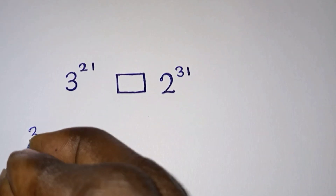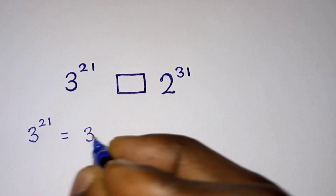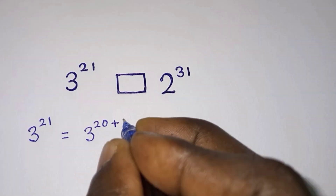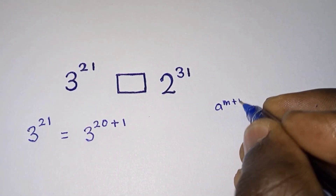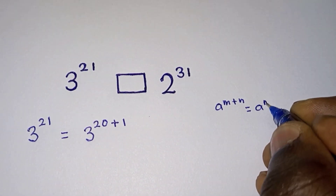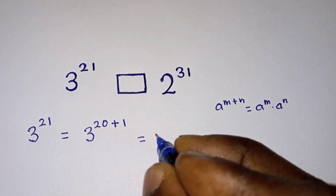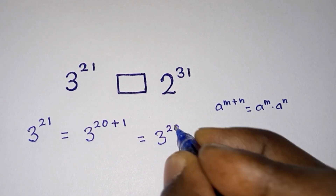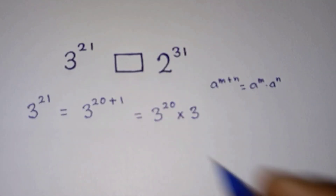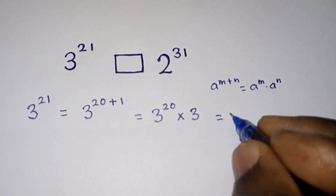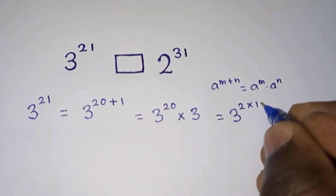First of all, let's pay attention to this number here. We have three to the power 21. We can write this as three to the power 20 plus one. Now from this rule over here, a to the power m plus n is the same as a to the power m times a to the power n. So based on this, we can write this as three to the power 20 times three to the power one, which is still three.